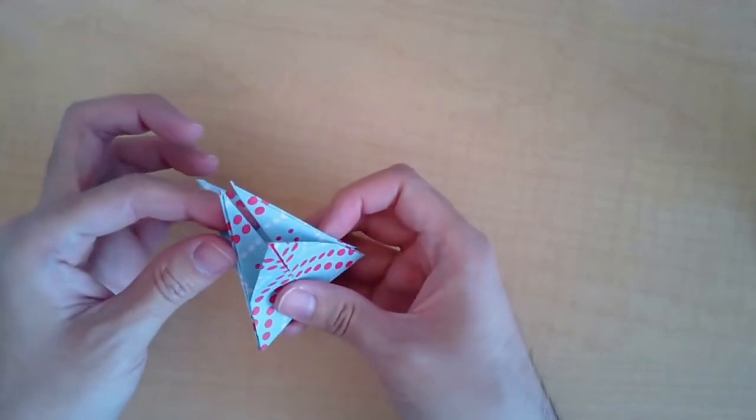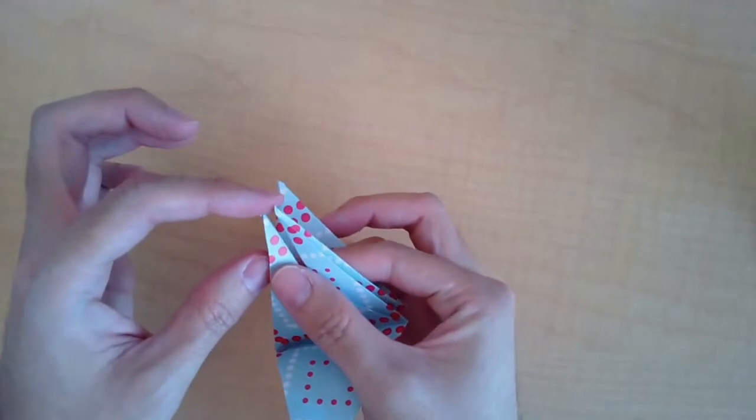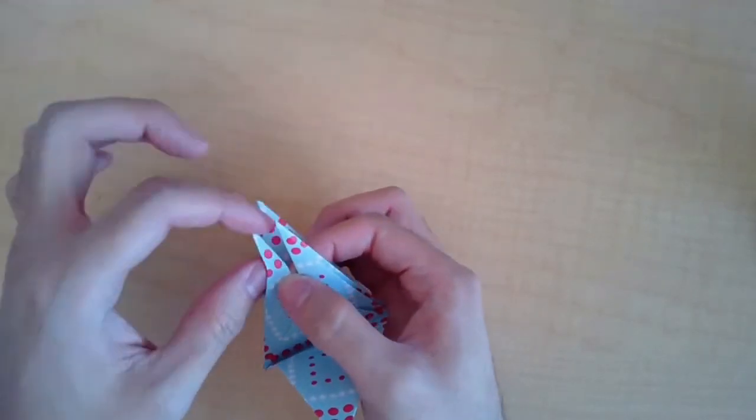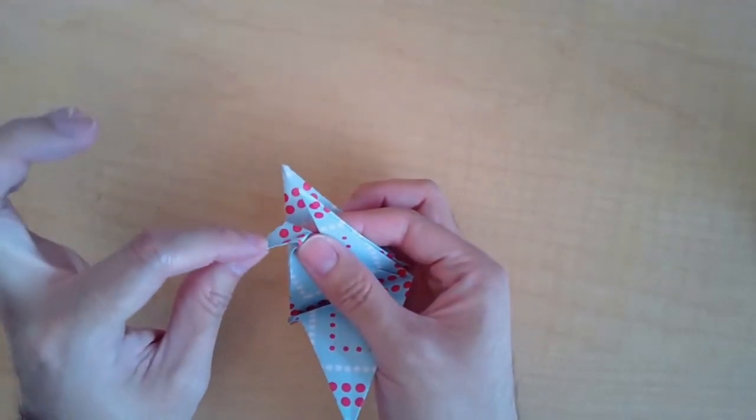Now you're going to turn the opposite side into a head, and the way that you do that you're going to pinch the back of its head and then pull this down.